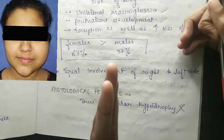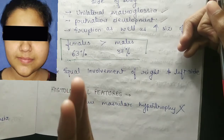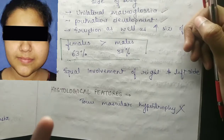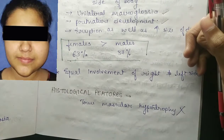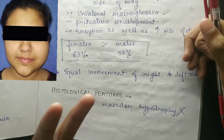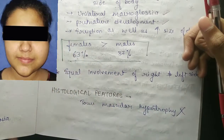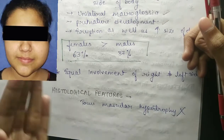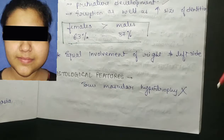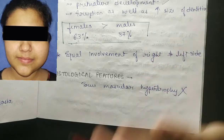There is equal involvement of both right and left sides. So right or left side of the body can be equally affected. Regarding histological features, true muscular hypertrophy is not seen in this condition.